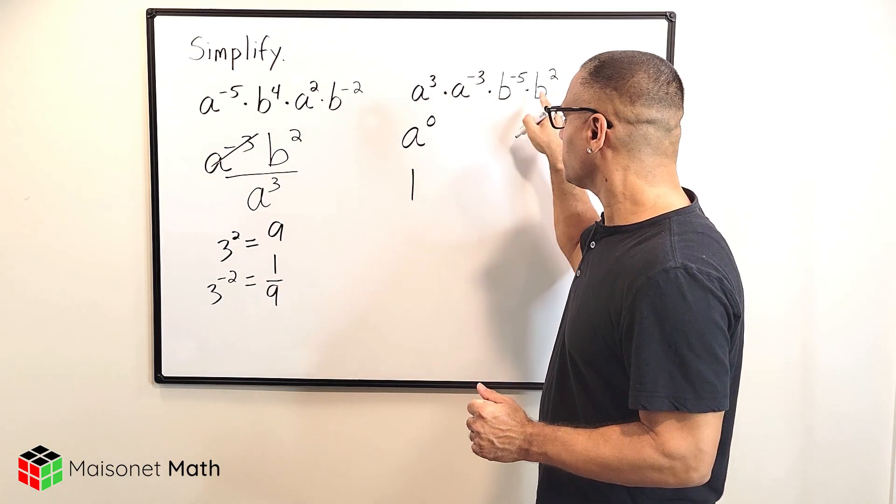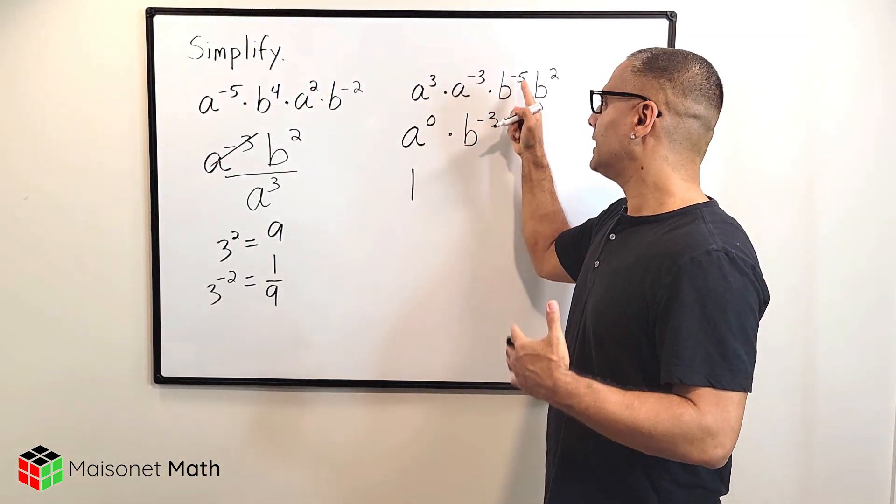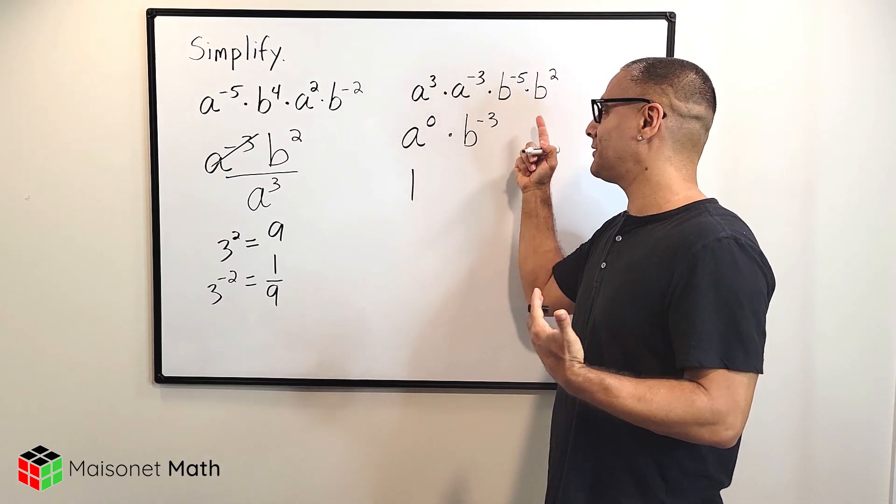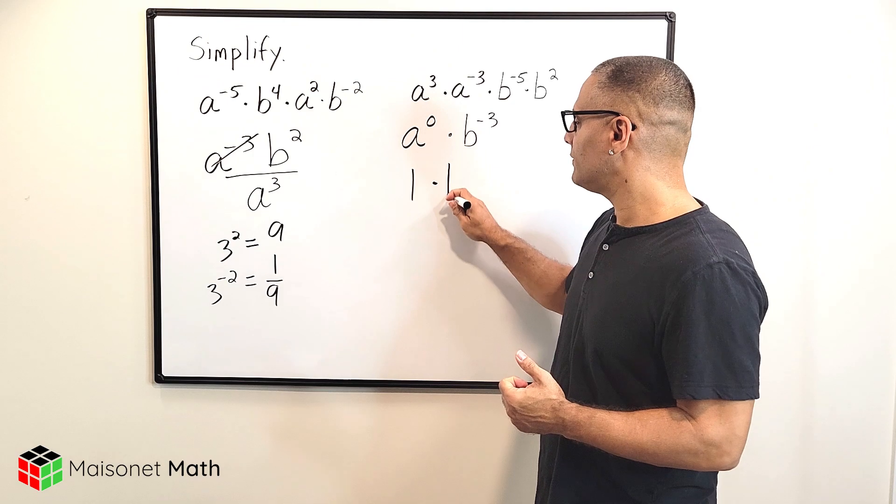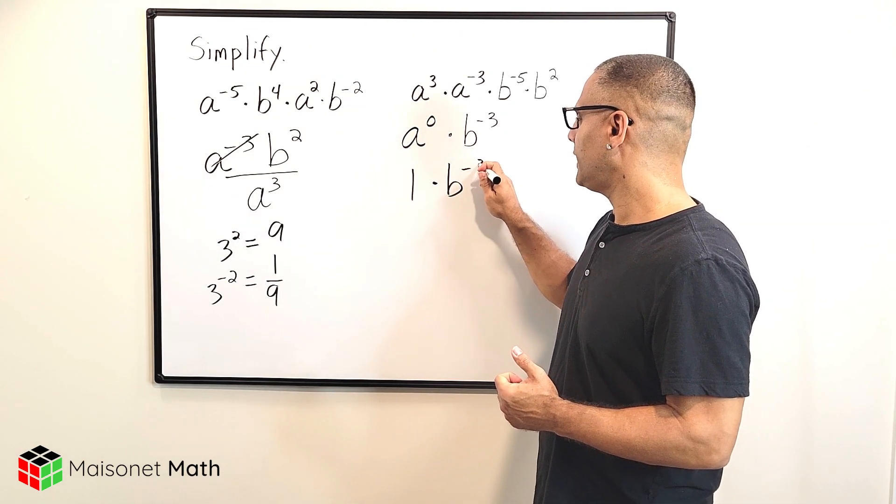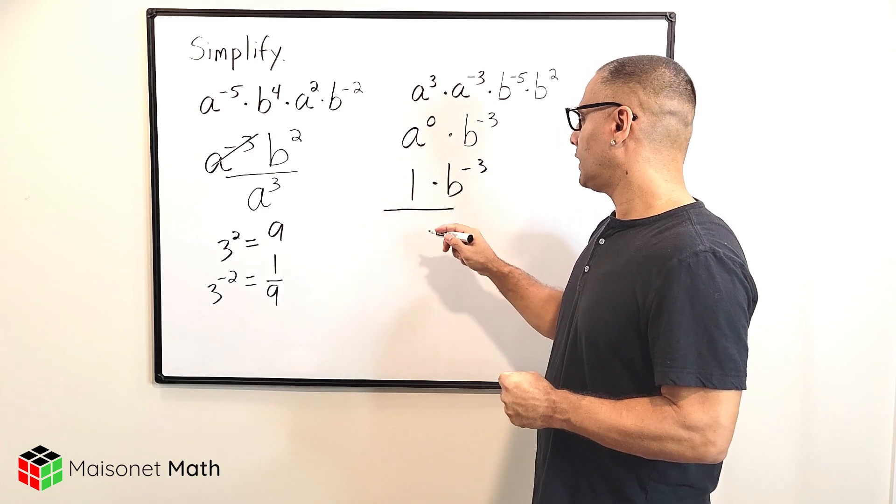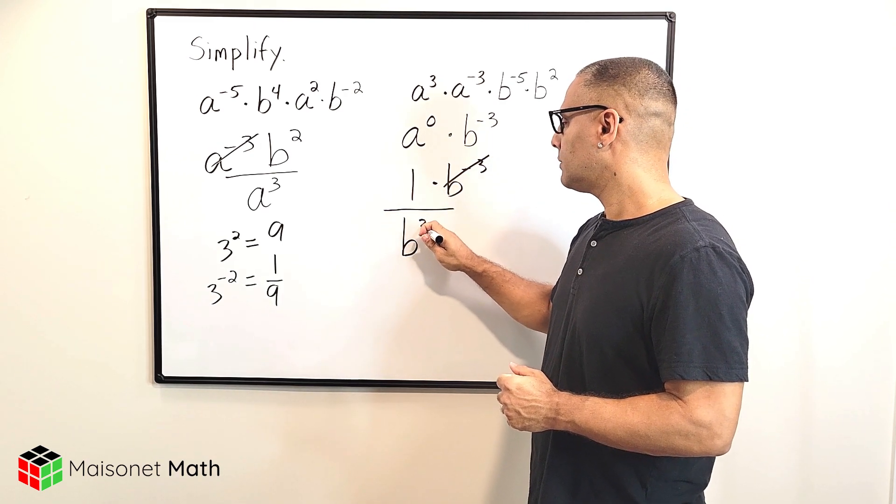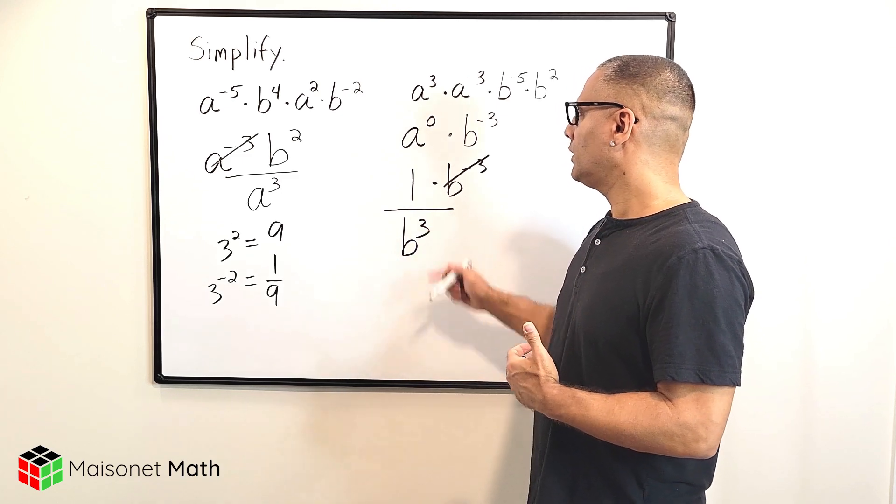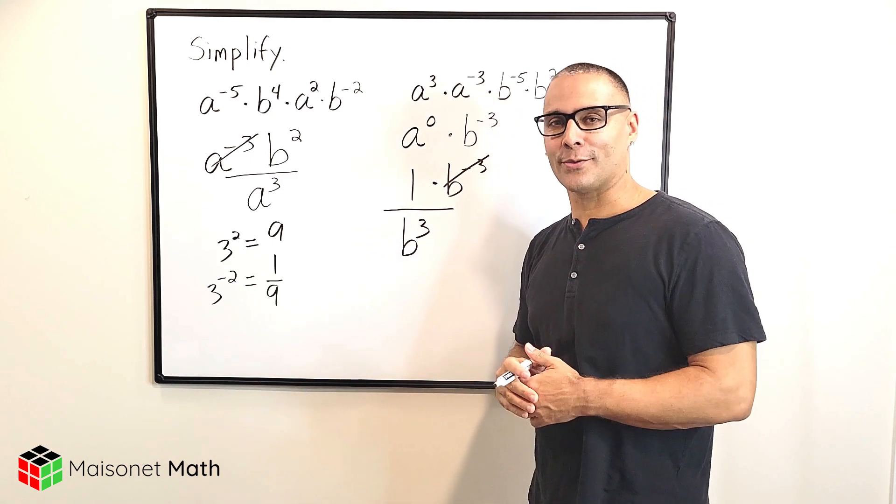And when we multiply the b's together, we have b to the negative third, because negative five and positive two has a sum of negative three. Now remember, we are not allowed to leave our exponent negative. So what we have to do is make a fraction bar and move this to the other side. We write that as b to the positive third. So this expression simplified would be one over b cubed or b to the third power.